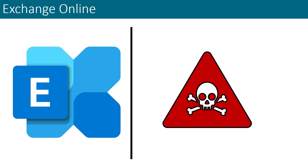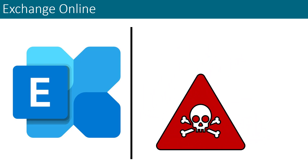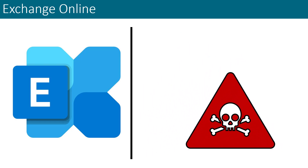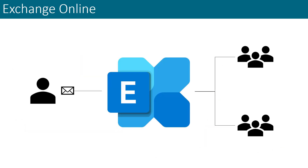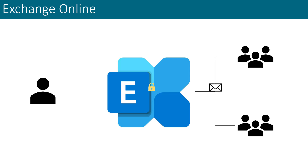EOP is a configurable anti-spam and anti-malware solution. Because Microsoft recognizes that there are organizations with specific mail flow requirements, Exchange Online also allows you to create connectors that facilitate such mail flow. An example of this would be a send connector that enforces certain security settings whenever mail is sent to a specific domain.